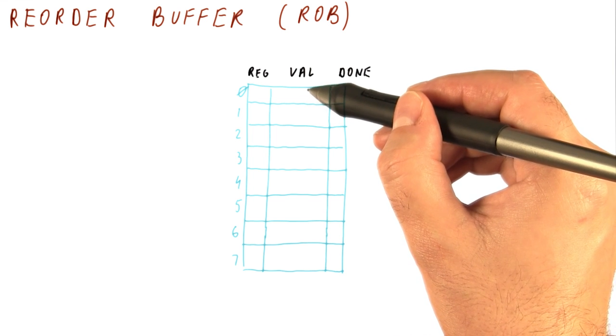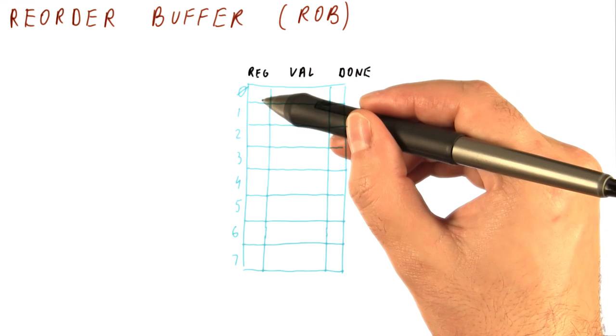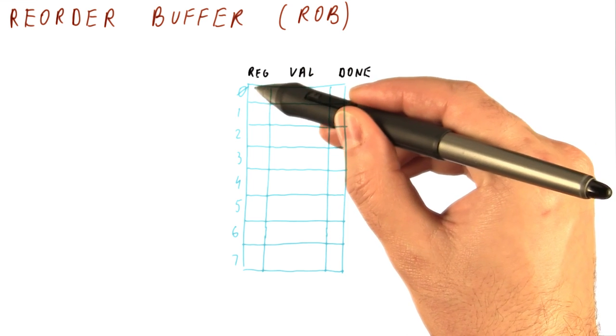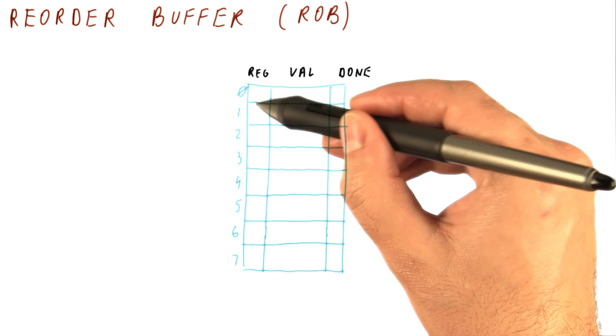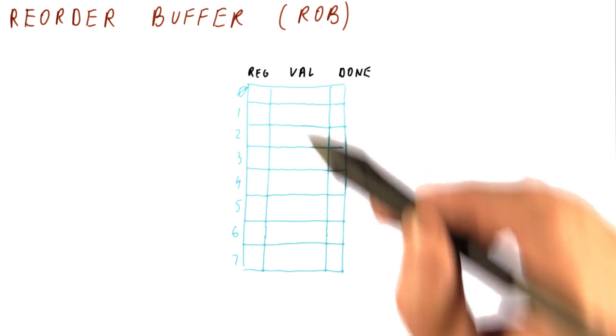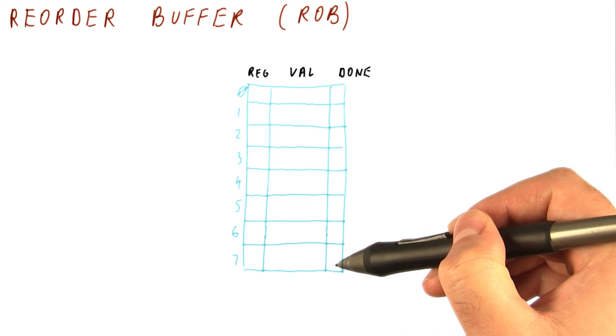And finally, in the end, we have to write this value to an actual register. And for that, we need to know when we do such a write, when we move this value from the reorder buffer to a register, what register are we going to write to. For example, this is a reorder buffer that can hold up to eight instructions.